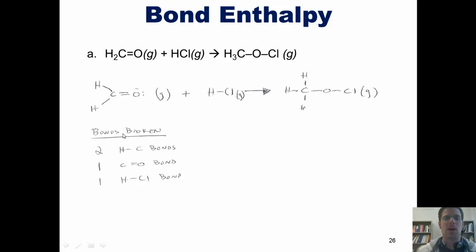If we look at the overall bonds that we see on the left side of the equation, you'll notice that there are two carbon-hydrogen single bonds. You'll also notice that there's one carbon-oxygen double bond and one hydrogen-chlorine single bond. If I go to table 8.4, I can get values for all of those bonds as shown here.